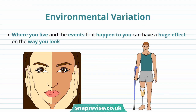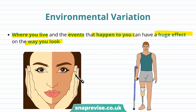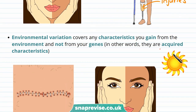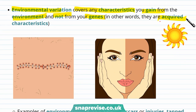Variation can also be due to the environment. Where you live and the events that happen to you have a huge effect on the way you look. For example, climatic conditions can affect the way you look, as well as injuries. Environmental variation covers any characteristic you gain from the environment and not from your genes — in other words, they are acquired characteristics.